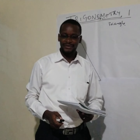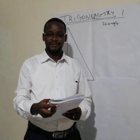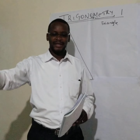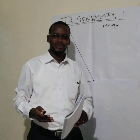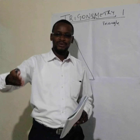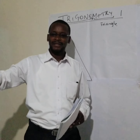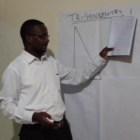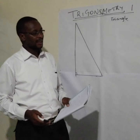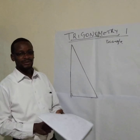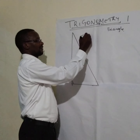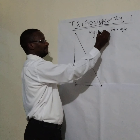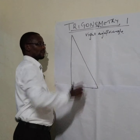This topic is divided into three parts for the 8-4-4 syllabus. We have part one, part two, and part three. Part one is taught in Form Two, part two is taught in Form Three, and part three is taught in Form Four. For now we are going to deal with part one, and this part one deals with right-angled triangles.